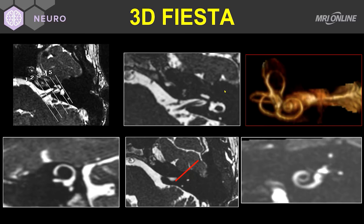As with CT, these Fiesta, CIS, and Turbo Field Echo scans can be reconstructed in multi-planar view. This is an example of using 3D Fiesta to look for superior semicircular canal dehiscence. We've taken the axial anatomy in the Fiesta sequence and reconstructed it in an oblique fashion to look at the semicircular canals. Here we have a reconstruction through the superior semicircular canal coming to the vestibule, and we note that there is bone above the superior semicircular canal between it and the brain — therefore, there is no superior semicircular canal dehiscence in this example.